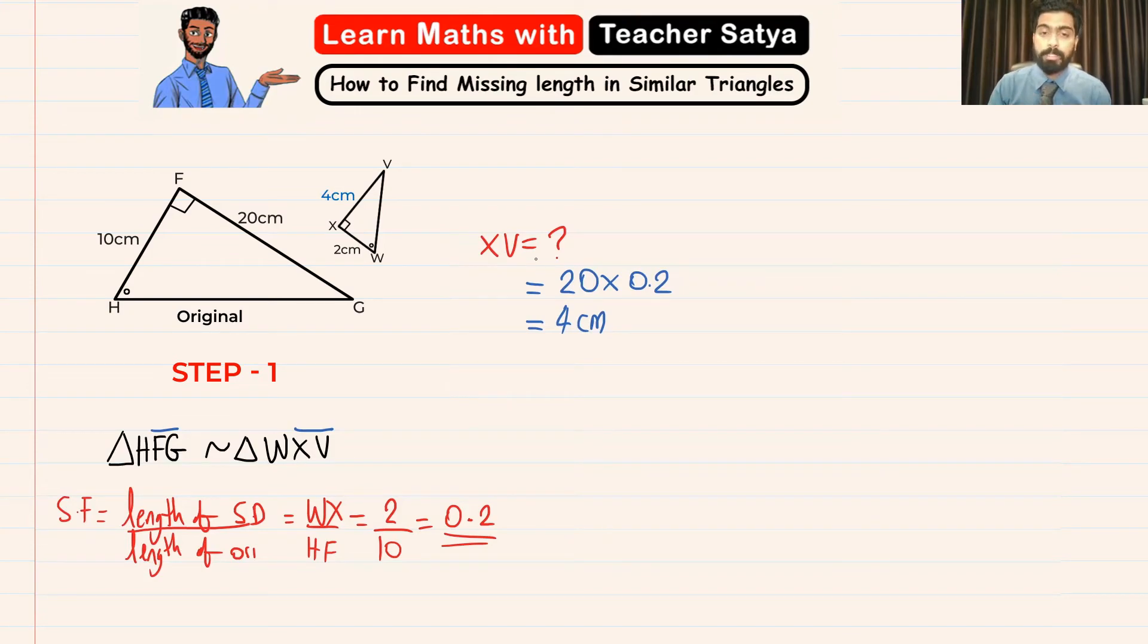Just to make sure if our answer is correct, we can find the scale factor. The scale factor of XV over FG should give us 0.2. We just found that XV is equal to 4 and FG is equal to 20, and 4 over 20 is 0.2. Therefore our answer is correct, and that is how we would find the missing length in similar triangles.